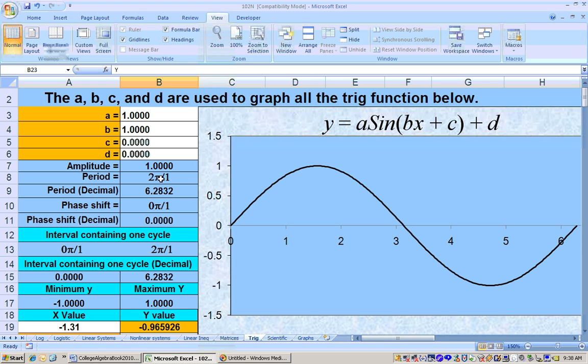This is the period right here calculated. Here's the period in decimal form. Phase shifting, that's shifting the graph right or left, is right here. And here's the interval that contains one cycle. And here it is in decimal.